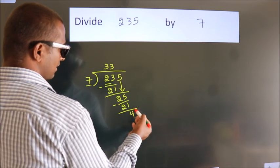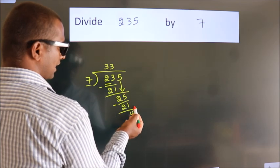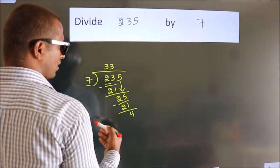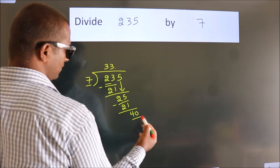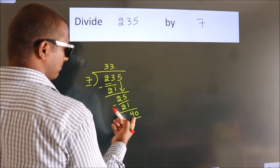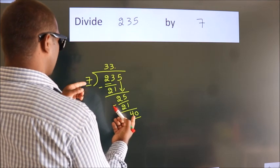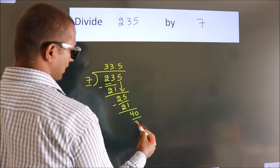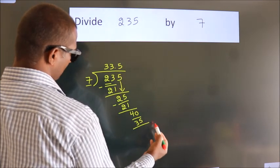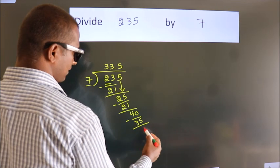After this, no more numbers to bring it down. So what we do is, we put dot take 0. So 40. A number close to 40 in 7 table is 7 fives, 35. Now we subtract, we get 5.